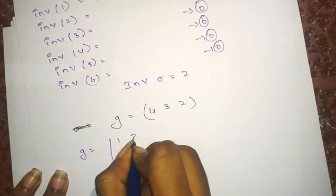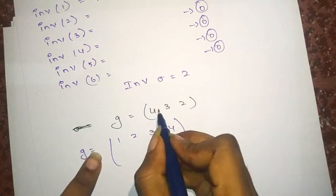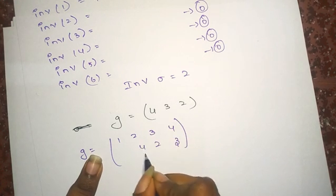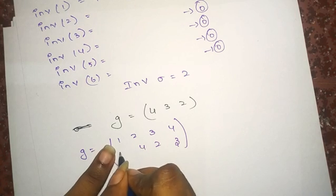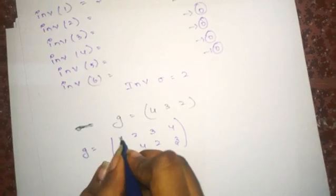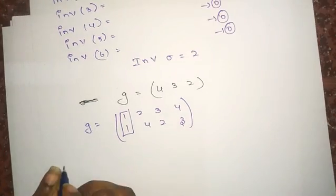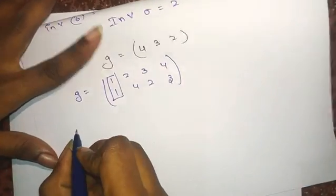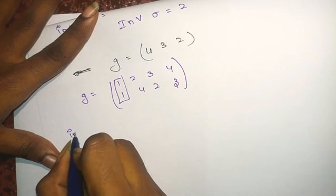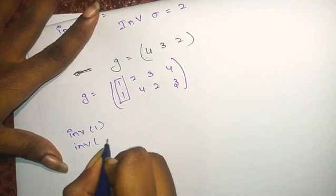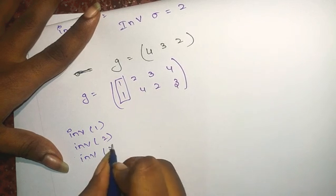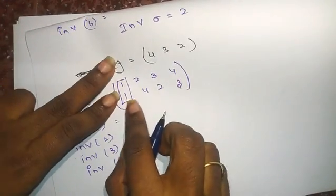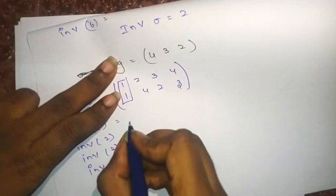Now for a second example with permutation g. Written in standard form: 4 is mapped to 3, 3 is mapped to 2, 2 is mapped to 4, and 1 is mapped to 1 itself — that's an identity mapping. Let me calculate inversion(1), inversion(2), inversion(3), and inversion(4). For inversion(1): f(1) = 1. 1 is not greater than 4, not greater than 2, not greater than 3 — so it is 0.